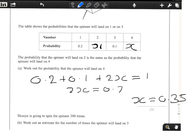The second part of the question, we're told that Shunyeh is going to spin the spinner 200 times. We've got to work out the estimate for the number of times the spinner will land on 3.